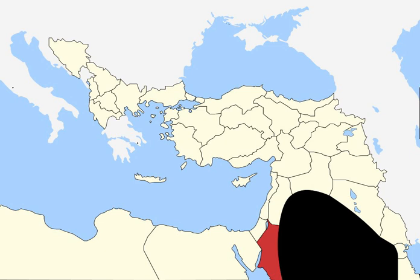1918, Faisal, the leader of the Arab Revolt and the third son of Hussein, king of Hejaz, is declared head of a provisional government in what was previously the Vilayat of Syria. The area which became Transjordan was split between the southern extension of Syria and the northern extension of Hejaz.